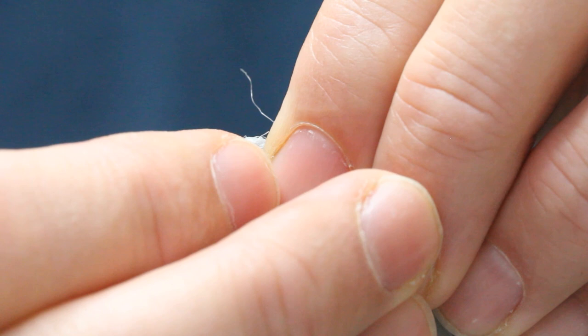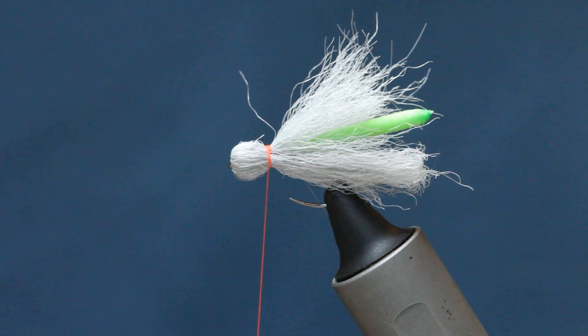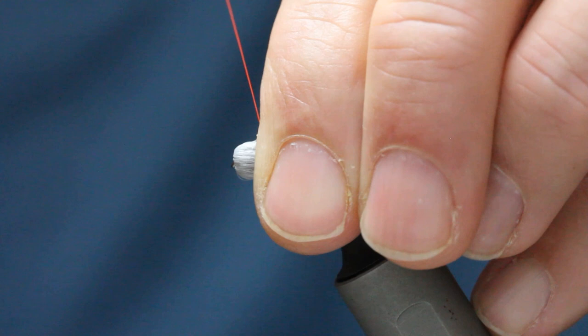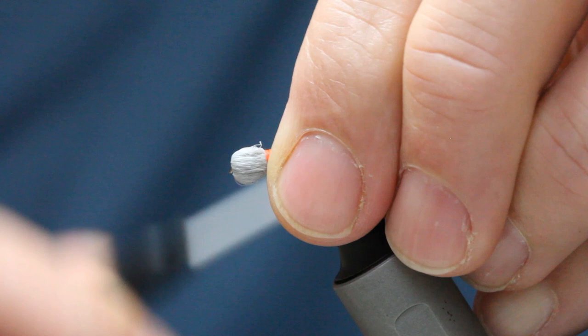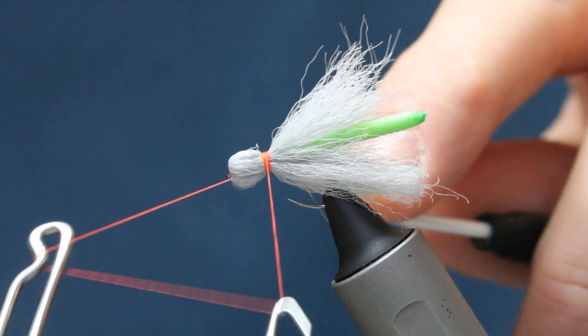Just make sure everything's back through the eye there. The eye is visible, you can kind of see it because of the bulk. Stroke all the fibers back and then create this perfect little collar like so. Then come in with a whip finish.